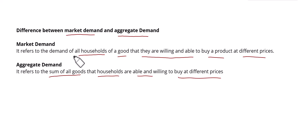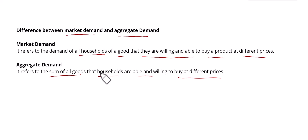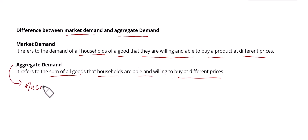So the major difference is: market demand shows the sum of demands for a single commodity that households are willing to buy at different prices. Aggregate demand, on the other hand, shows the sum of all goods — A, B, C, D, E, F, G — all the goods that consumers are willing to buy at different prices. Market demand covers only a single commodity, while aggregate demand covers all goods.